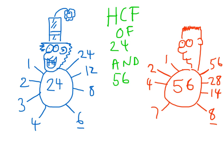So the question is, we want to find the highest common factor — the HCF — of 24 and 56. And that's just a simple matter of looking at both of our factor spiders and seeing what's the biggest number that's in both lists. As we look round, we can see that 8 is that number. So the highest common factor of 24 and 56 is 8.